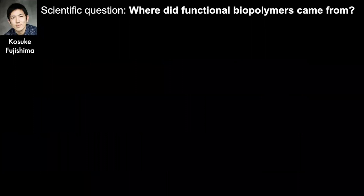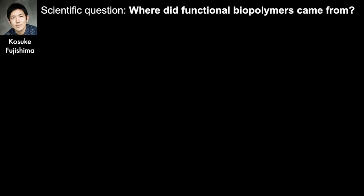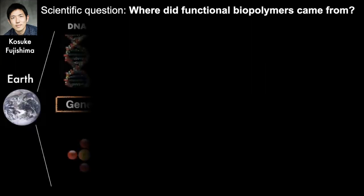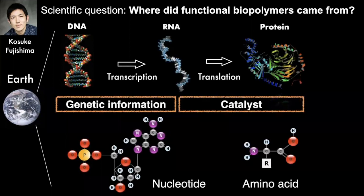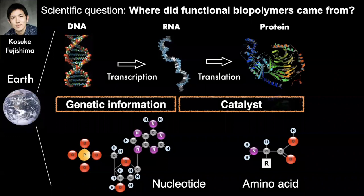Hello everyone. My name is Kosuke Fujishima, one of the ELSI PI members. The scientific question I'm interested in is: where did functional biopolymers come from? On Earth, life uses specific biopolymers such as DNA and RNA consisting of nucleotides for storing genetic information and replication, while amino acid polymers known as proteins run different chemical reactions. However, we still don't know how these polymers arose on early Earth, nor whether they also exist on other planetary bodies such as Mars or icy moons.